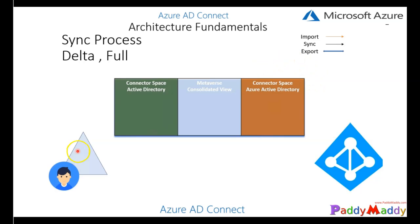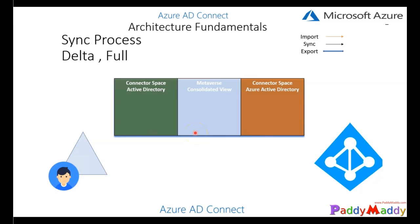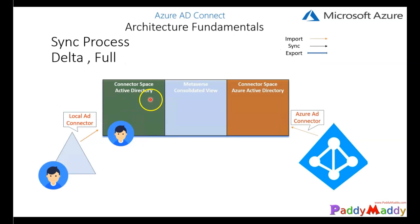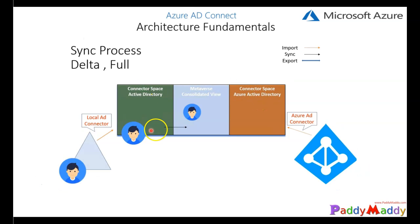Let's deep dive into what things will be involved. When you install Azure AD Connect in the background, a connector space called Active Directory gets connected as well as the Azure AD Connect. In between, Metaverse is a consolidated view between these two objects. Once you connect to the local AD connector, all these objects — let's say 100 objects — will come back with the help of the connector space into the Azure Active Directory. Similarly, from Azure AD, all the objects will come into connector space called Azure AD Connect, and as a next step these objects will come back to the Metaverse consolidated view.